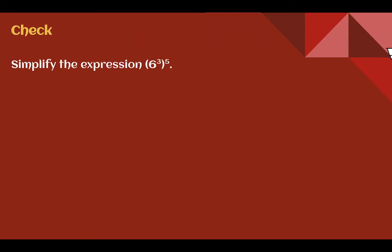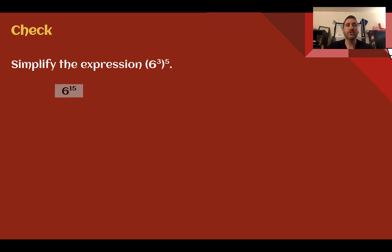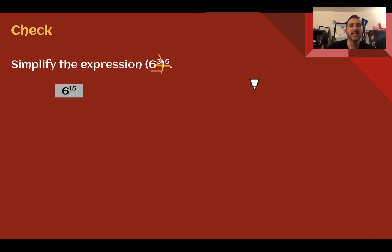Check your understanding: Simplify the given expression. Pause the video now and complete the check. You should have found 6 to the 15th. Power inside parentheses, exponent outside — multiply the two things. 3 times 5 is 15, so 6 to the 15th power.